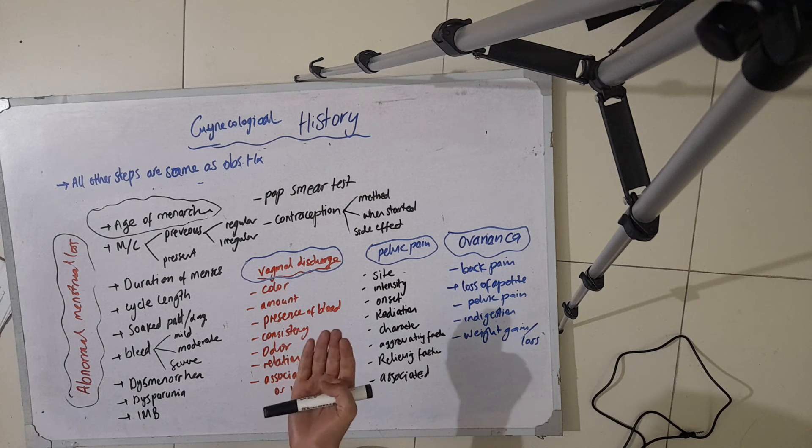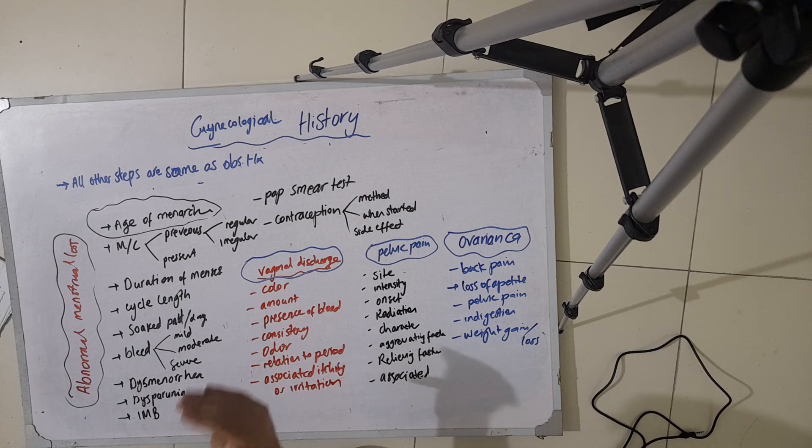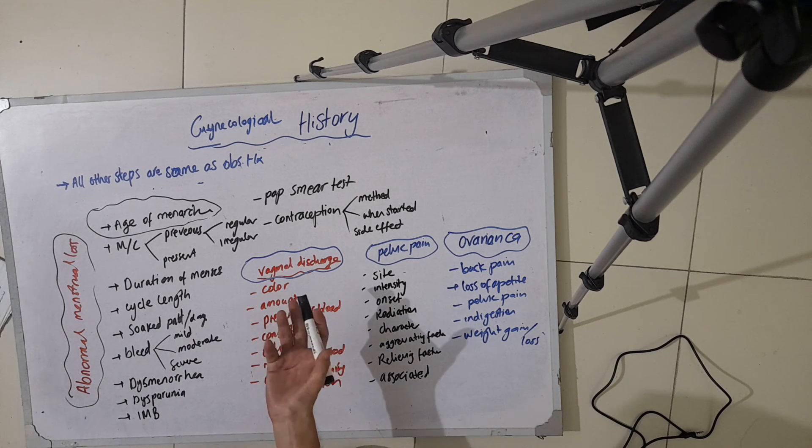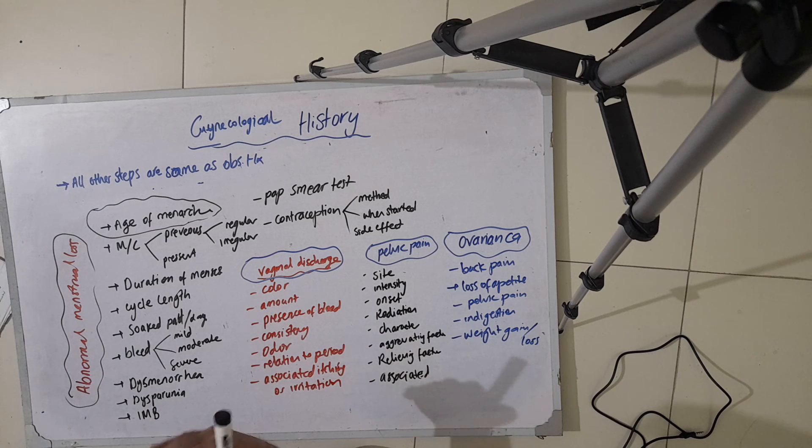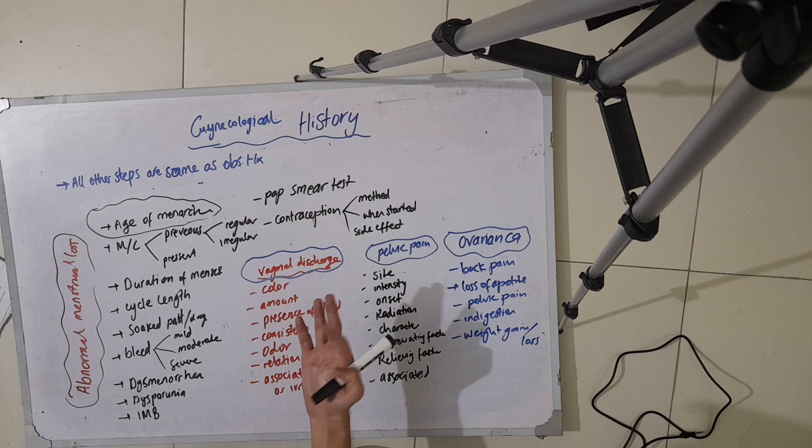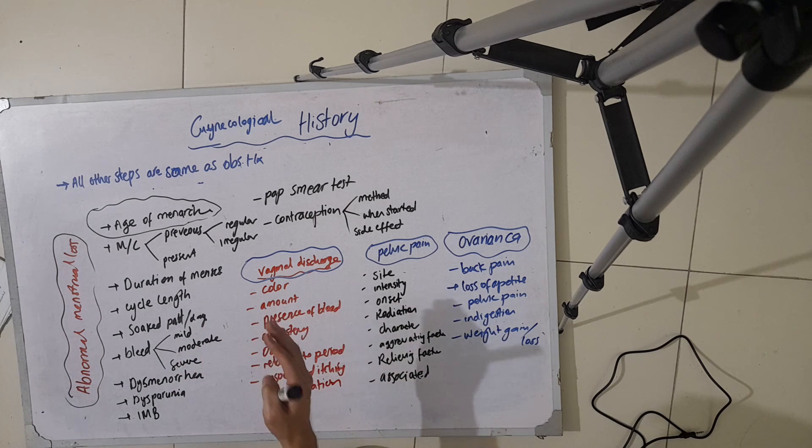You also ask about history of previous surgery. In the family history, you ask for any child abnormality, any history of diabetes, hypertension, asthma, TB, hepatitis C, and hepatitis B.